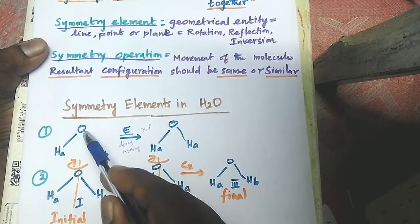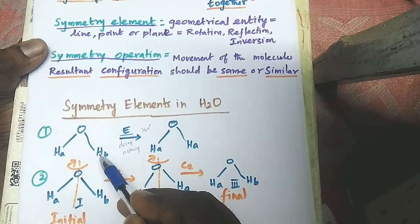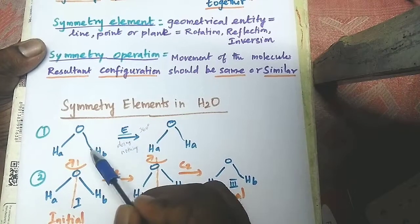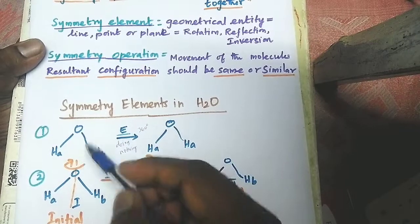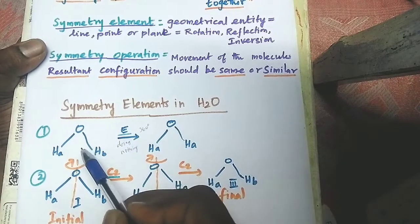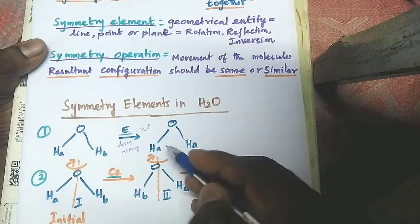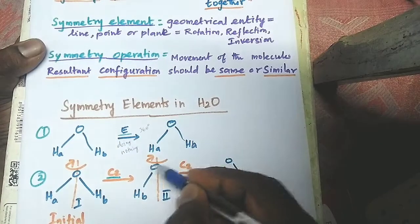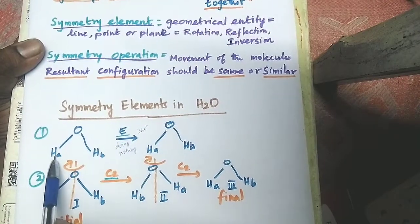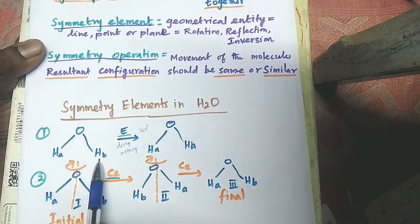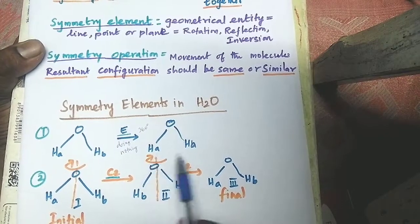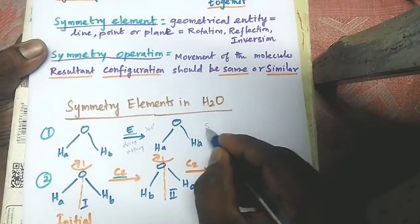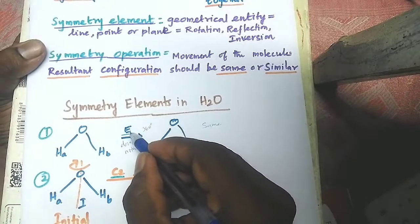This is the water molecule with oxygen and two hydrogens. I am labeling this hydrogen as HA and this hydrogen as HB. When we do nothing on this structure, we get the same configuration. Or when we do a 360 degree rotation, we also get the same configuration — HA remains on the left and HB on the right. So the initial and final configurations are the same, and we can confirm that the symmetry element E is present in the water molecule.